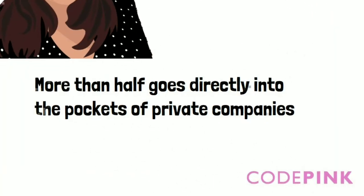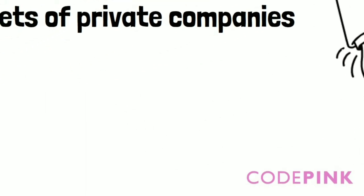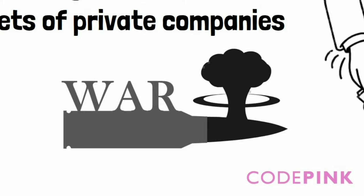So where does all that money go? Well, more than half goes directly into the pockets of private companies that contract with the federal government to turn a profit to prepare for war.